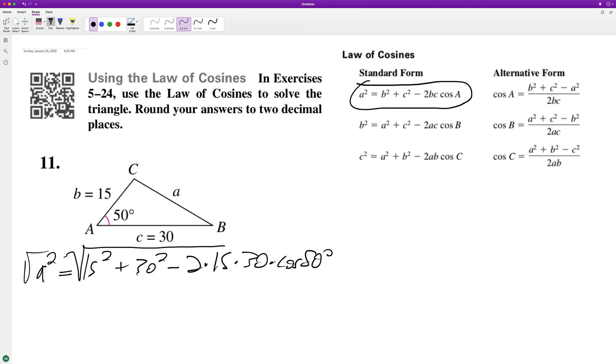What we end up with when we punch this into a calculator, rounding to two decimal places, is 23.38. Next we'll solve for angle B.